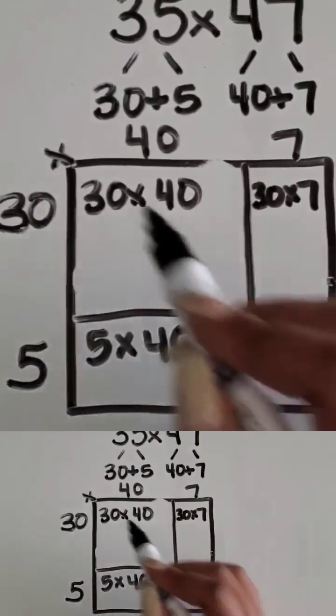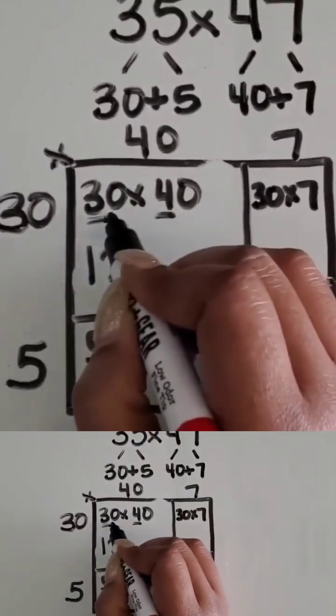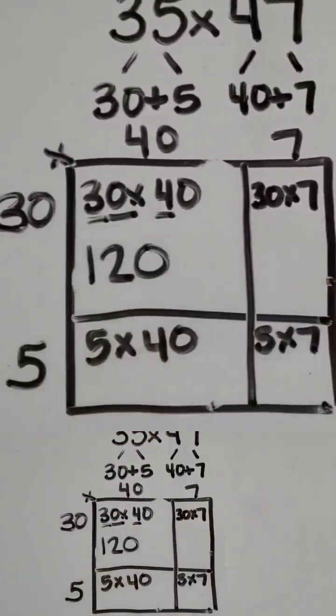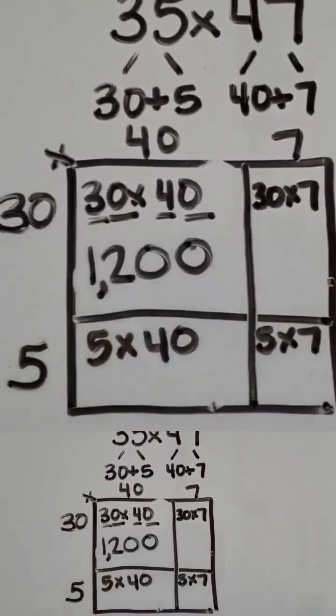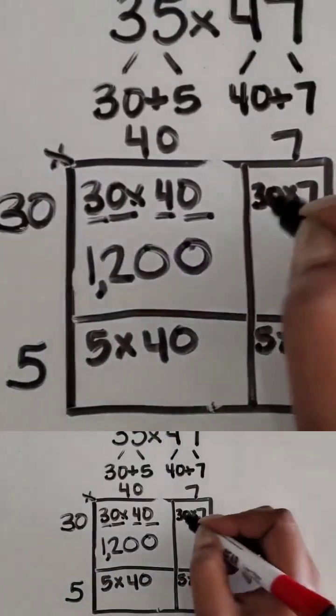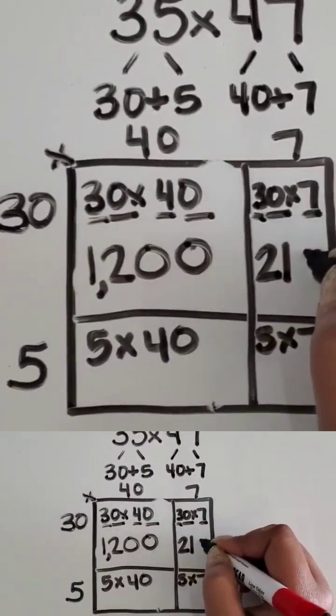So we know 3 times 4 is 12, 10 times greater than 12 would be 120, and then 10 times greater than 120 is 1,200. 3 times 7 is 21, 10 times greater than 21 is 210.